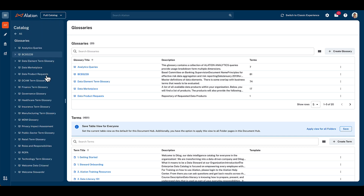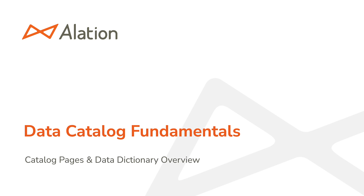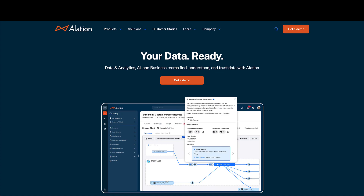Each document hub is featured prominently in the catalog navigation, and search results can be filtered based on document hubs. In this video, we've covered the basics of how information is organised within Alation through the use of data catalog pages — from data sources and BI queries, through to organisational knowledge in glossaries and document hubs. Visit alation.com to learn more about Alation, the leading data intelligence platform.